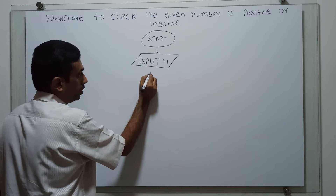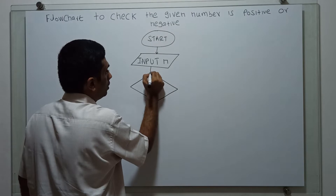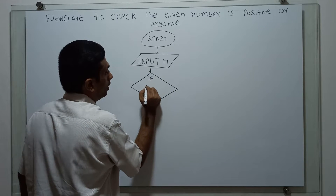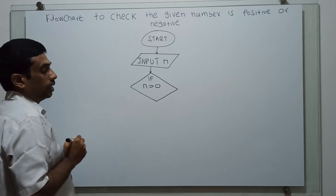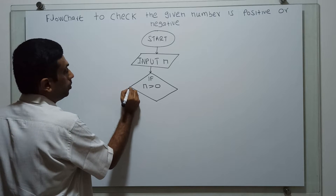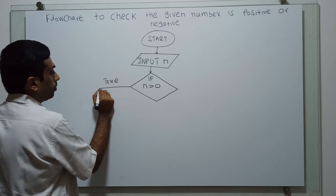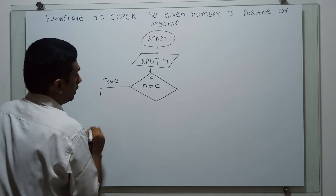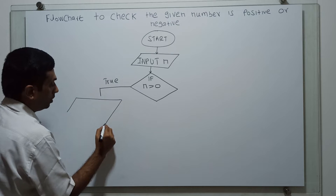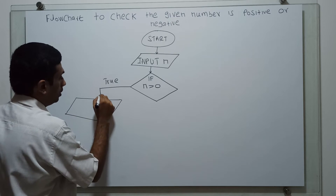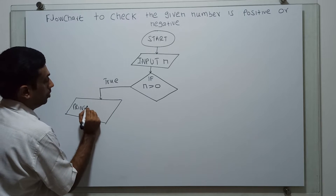Next, I am checking if n is greater than 0. If this condition is true, I am printing n is positive. Print positive.